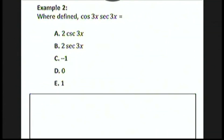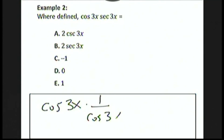Let's look at an example. Where defined, cosine 3x times secant 3x is equal to what? We rewrite secant 3x as 1 over cosine 3x using the reciprocal identity. These cancel, and we just get 1, which is exactly choice E.